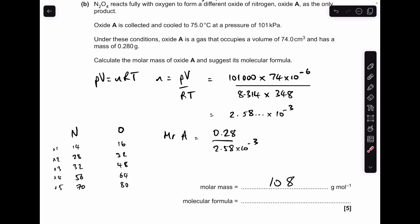So for the molecular formula, it's a bit of trial and error really. You can see I've just got multiples of nitrogen and multiples of oxygen in terms of their MRs. So we're looking for a combination of nitrogen-oxygen that's going to give us this 108.